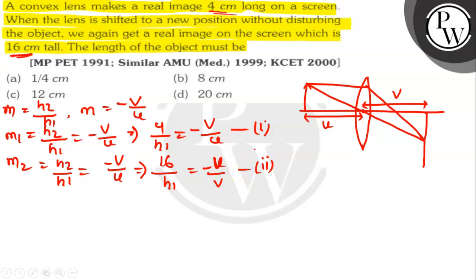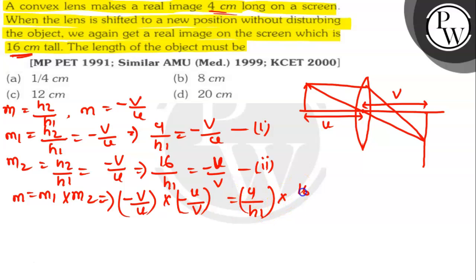Multiplying equation 1 and 2, we get m1 into m2. So it will be minus v by u into minus u by v equals 4 by h1 into 16 by h1. On substituting the corresponding values, 1 equals 4 by h1 into 16 by h1.